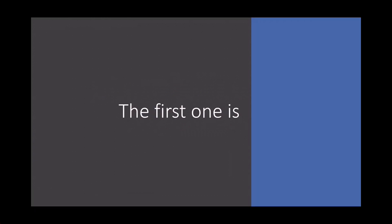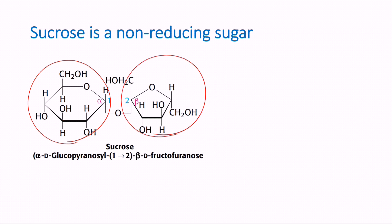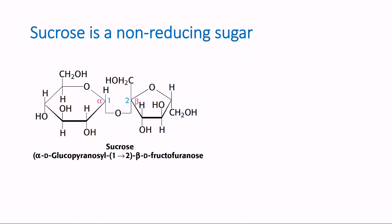The first one is sucrose. Sucrose is a non-reducing sugar. Sucrose is made up of glucose and fructose. You can see that glucose is in pyranose form and fructose is in furanose form. The linkage between glucose and fructose is alpha 1 to 2.